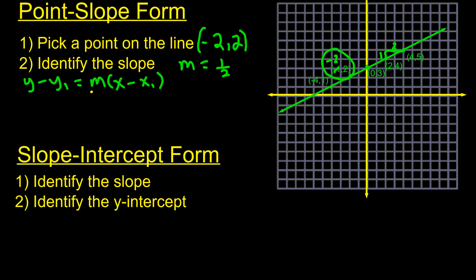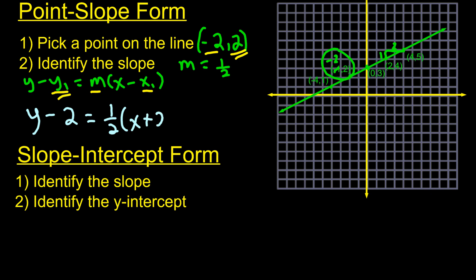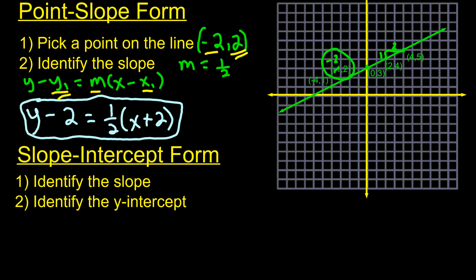We know the slope is 1/2, x1 is -2, and y1 is 2, so we plug that in: y minus 2 equals 1/2 times (x minus negative 2). When you have minus and negative, that changes to a plus, so it becomes x plus 2. And that's your equation — you don't have to solve it any further. That's the answer in point-slope form.